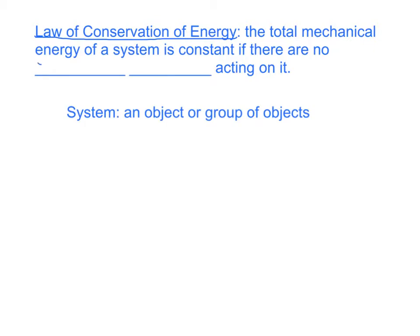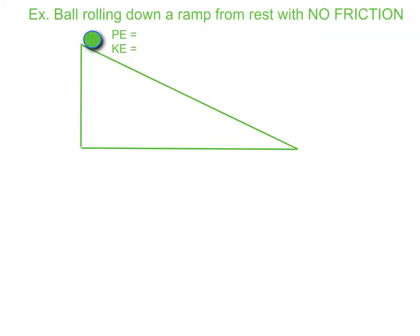We're going to take a look at some examples of this. By system we mean an object or a group of objects. If there are no external forces acting on it, and the most typical example of an external force is friction.